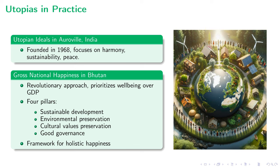Imagine a society that embellishes happiness as a determinant of progress rather than economic figures. Implementing such utopian concepts in an actual societal framework propels us closer to a world that ceaselessly strives for a higher collective well-being. Both Oroville and Bhutan depict utopias growing and thriving in the heart of real-life societies, offering us intriguing tints of inspiration to garner for our own utopia.